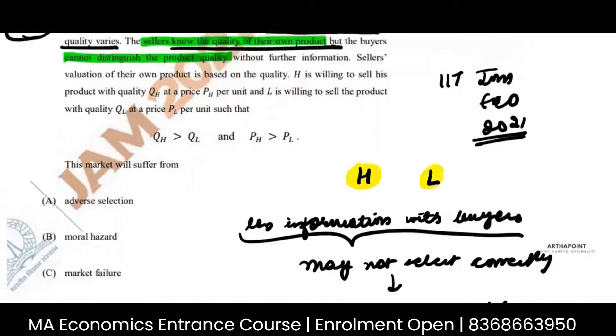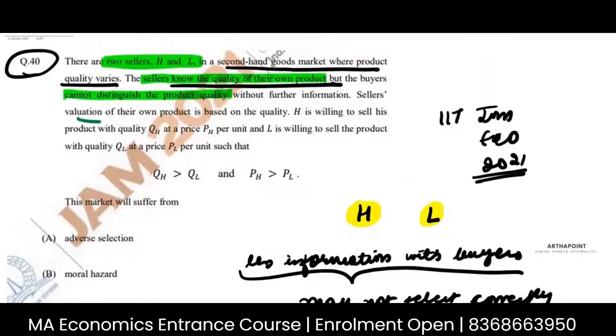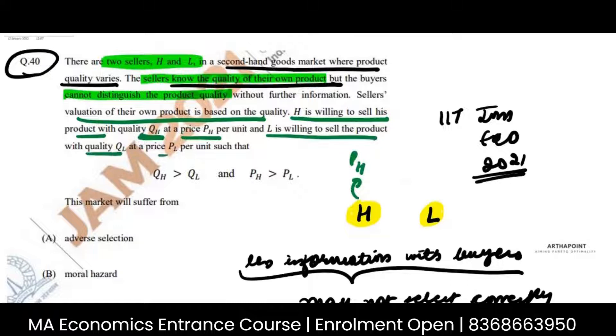Right, from here we know this. Without further information, sellers' valuation of their own product is based on the quality. H is willing to sell his product with quality QH at price pH. And L is willing to sell his quality of product at price PL.